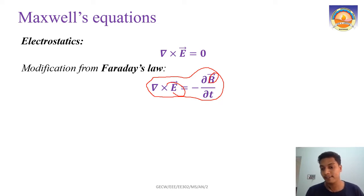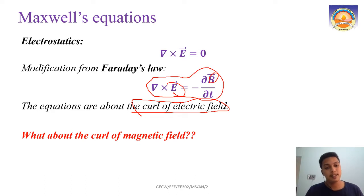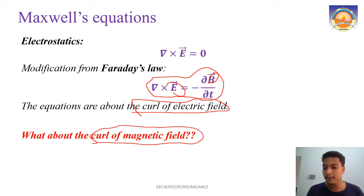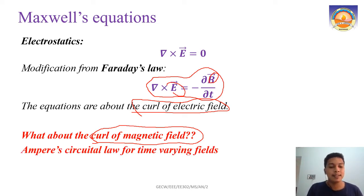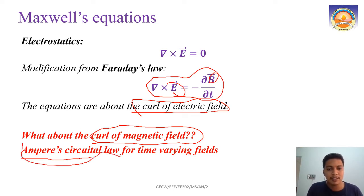Those equations concerned the curl of the electric field. Similarly, for the magnetic field we also have a Maxwell's equation based on the curl. What is that equation? What about the curl of the magnetic field? That equation is based on Ampere's circuit law: del cross H equals J — the curl of H equals the current density. Now let us see whether there is some problem with that when it comes to the time-varying case.